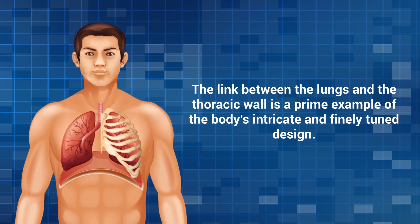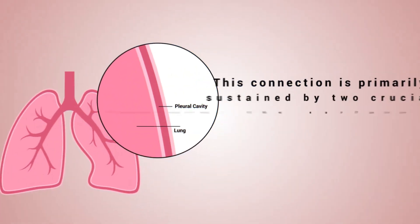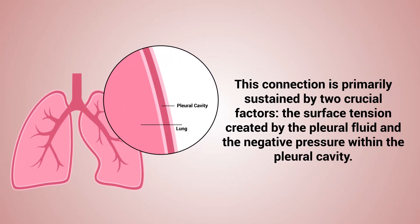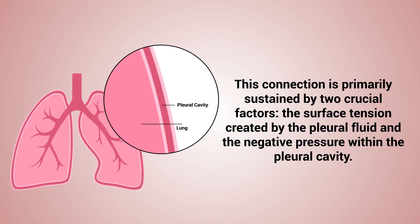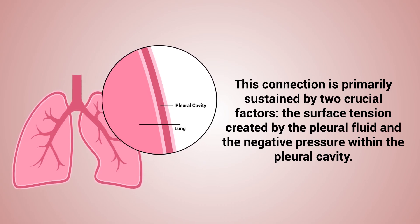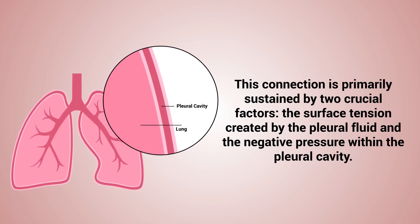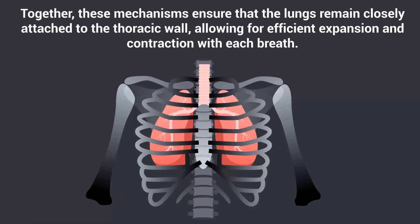The link between the lungs and the thoracic wall is a prime example of the body's intricate and finely tuned design. This connection is primarily sustained by two crucial factors: the surface tension created by the pleural fluid, and the negative pressure within the pleural cavity. Together, these mechanisms ensure that the lungs remain closely attached to the thoracic wall, allowing for efficient expansion and contraction with each breath.